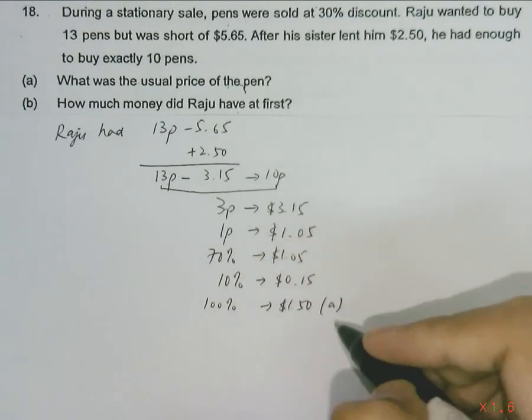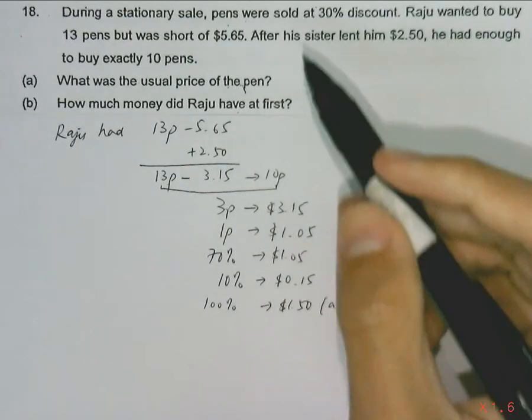Which is our answer for part A. So 100% of the price of the pen will be the usual price of the pen.